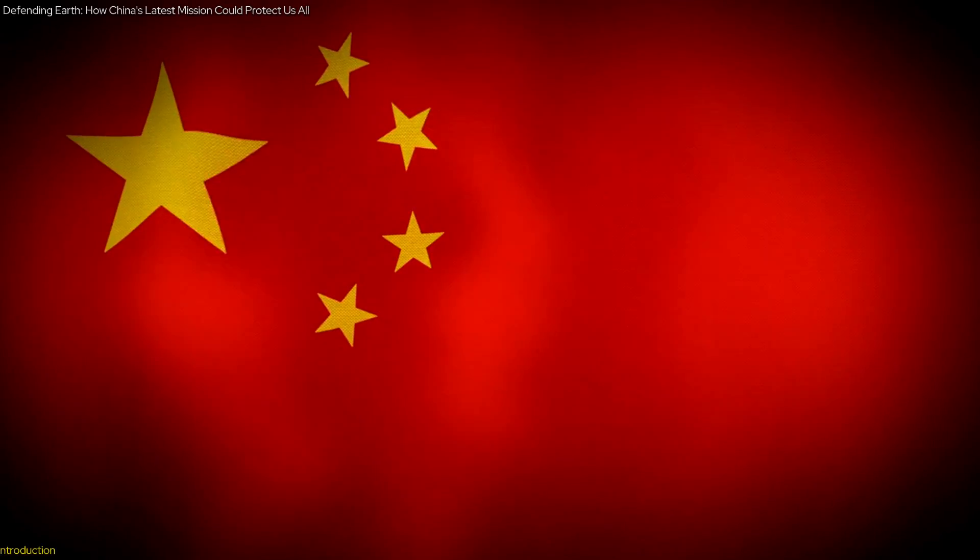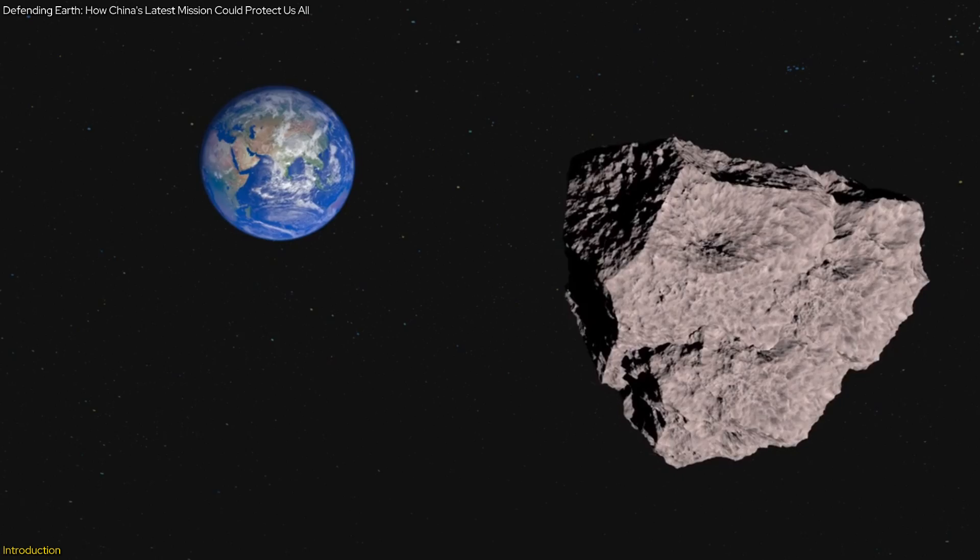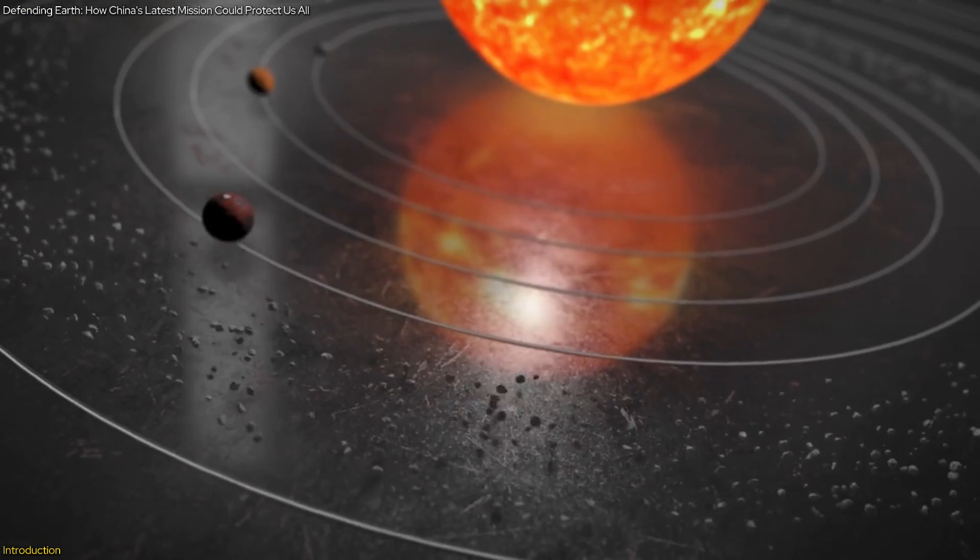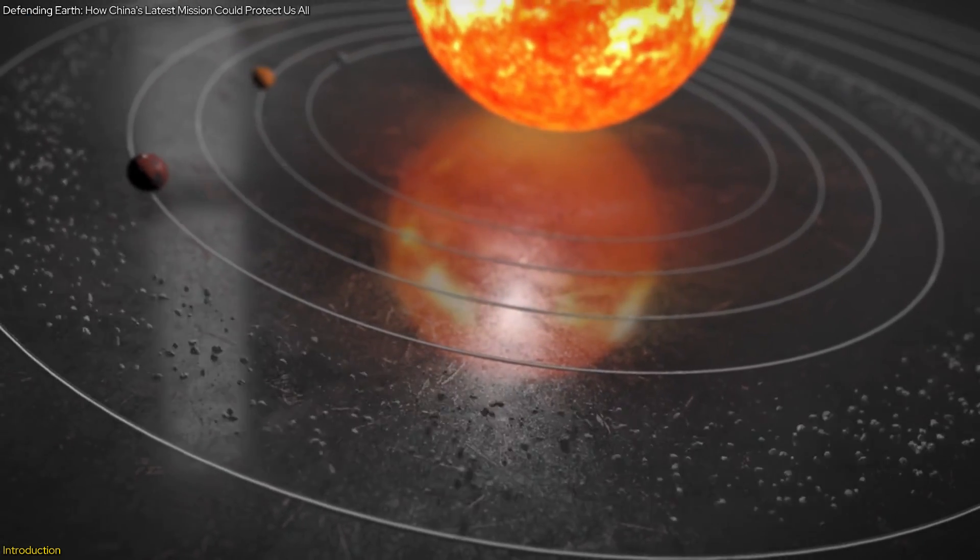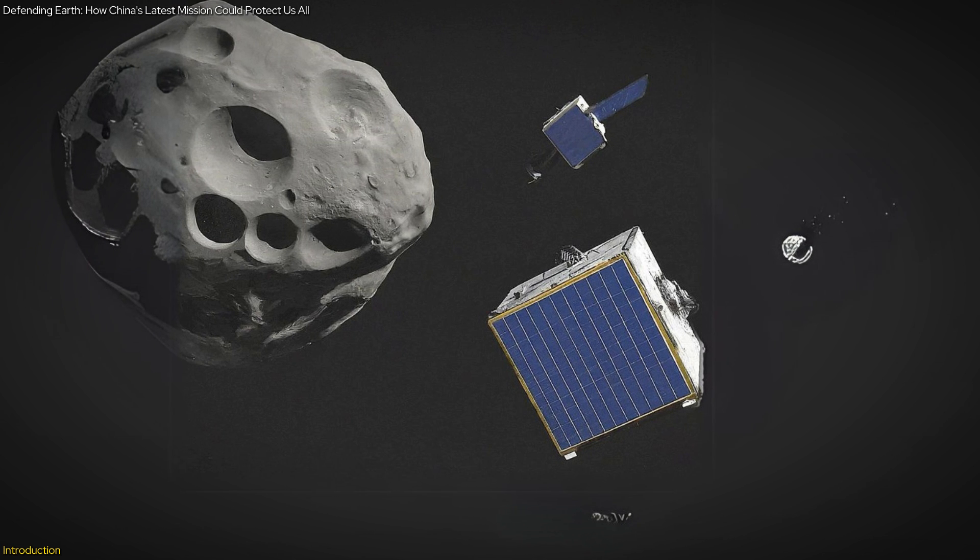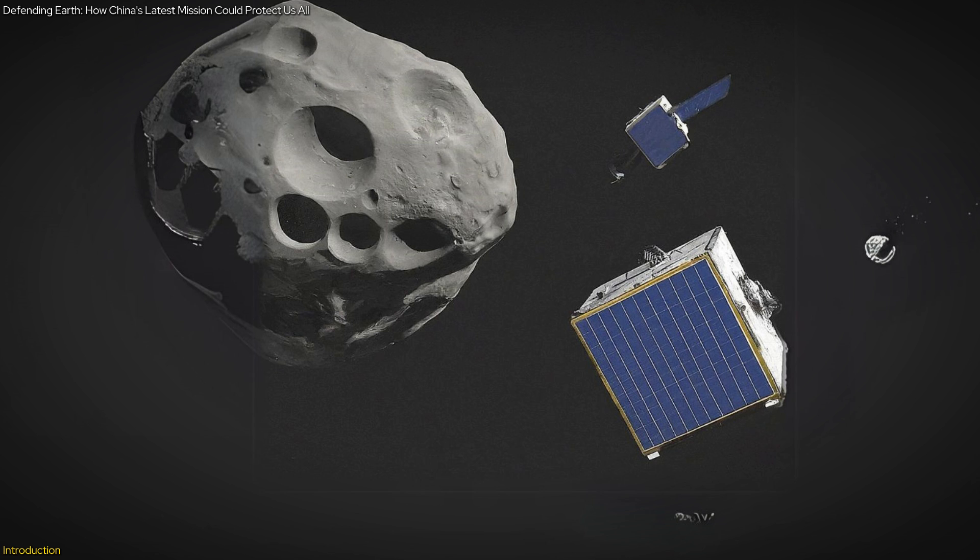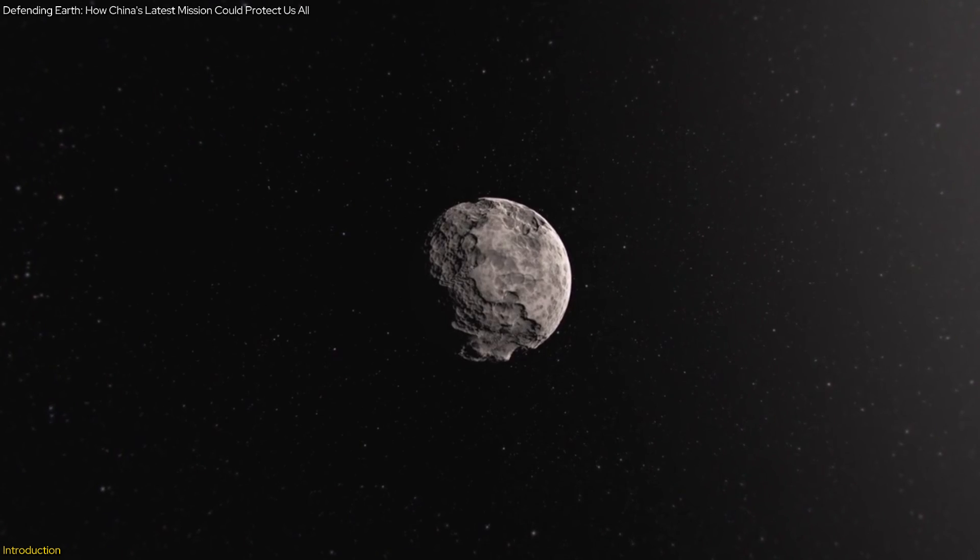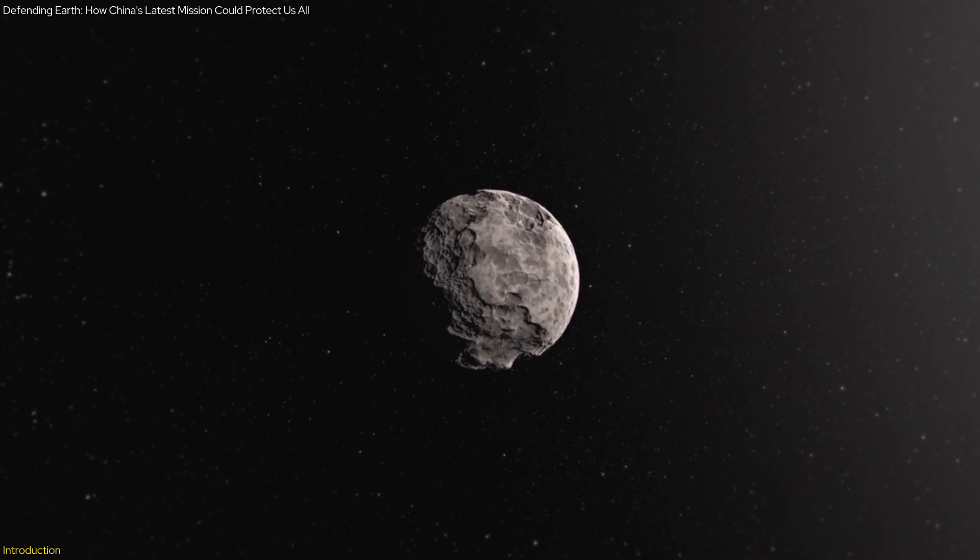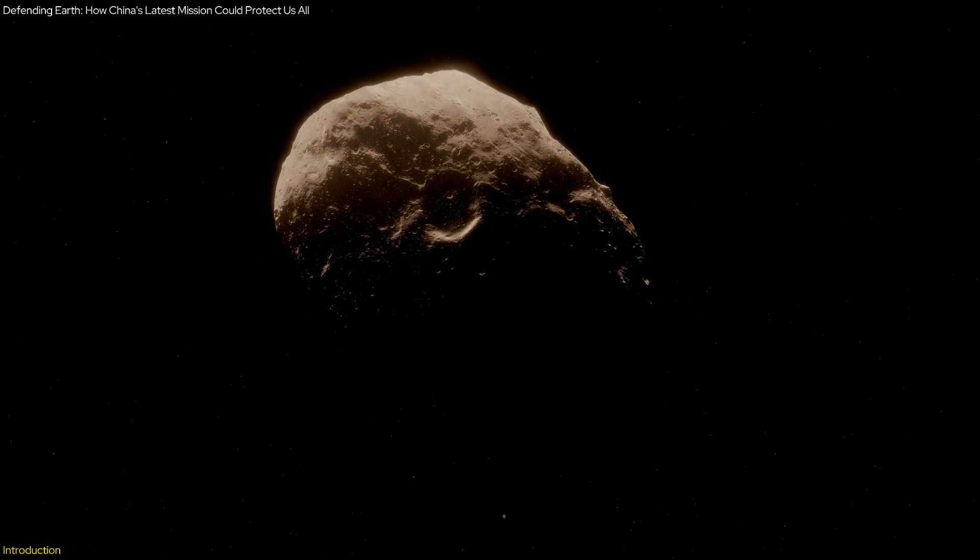China is launching a groundbreaking planetary defense mission to deflect a near-Earth asteroid, aiming not just to protect our planet but also to advance our understanding of the solar system. This ambitious mission involves a dual spacecraft strategy, one to observe and one to impact the asteroid 2015 XF261. By closely studying the asteroid before and after the impact, China seeks to gain unprecedented insights into asteroid composition and behavior.